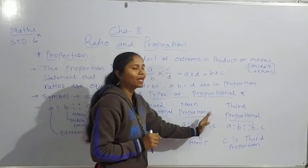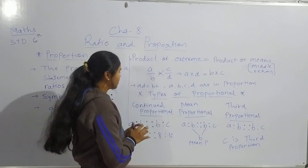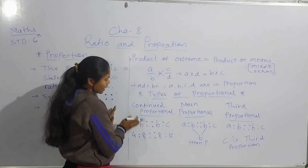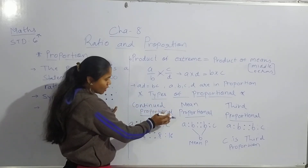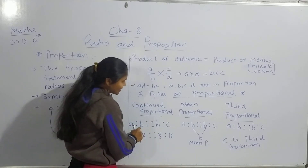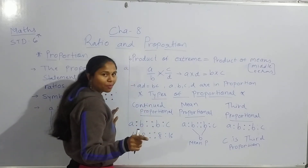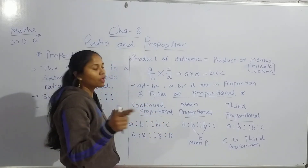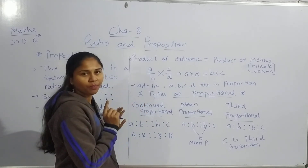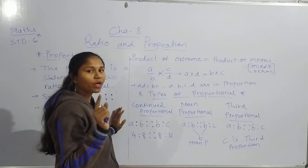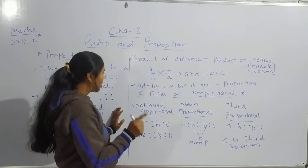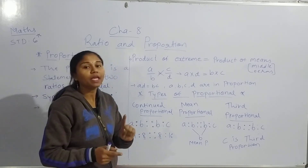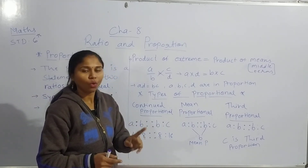Now let us know the relation between these. If the proportion is a continual proportion, then b is called the mean proportional and c is called the third proportional. But one condition: the proportion must be continual.